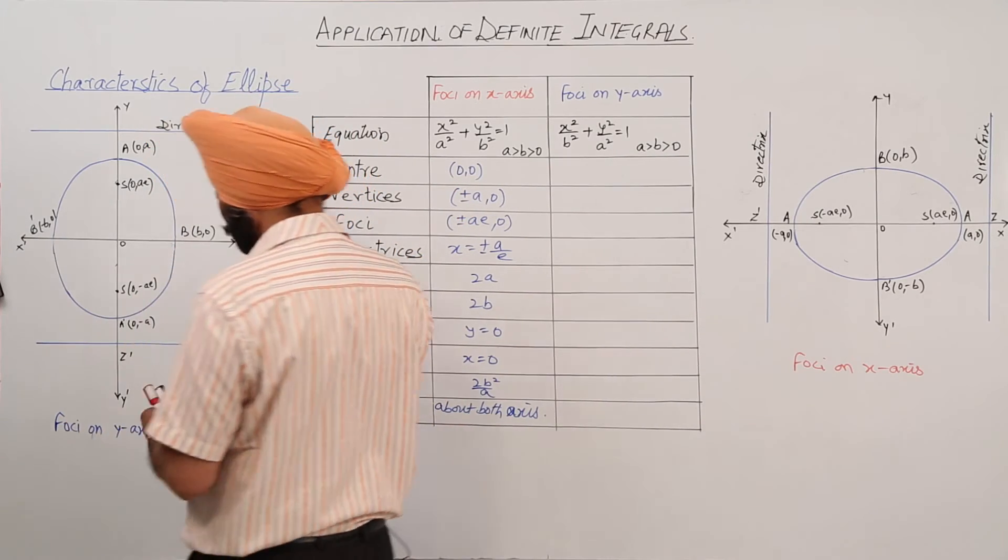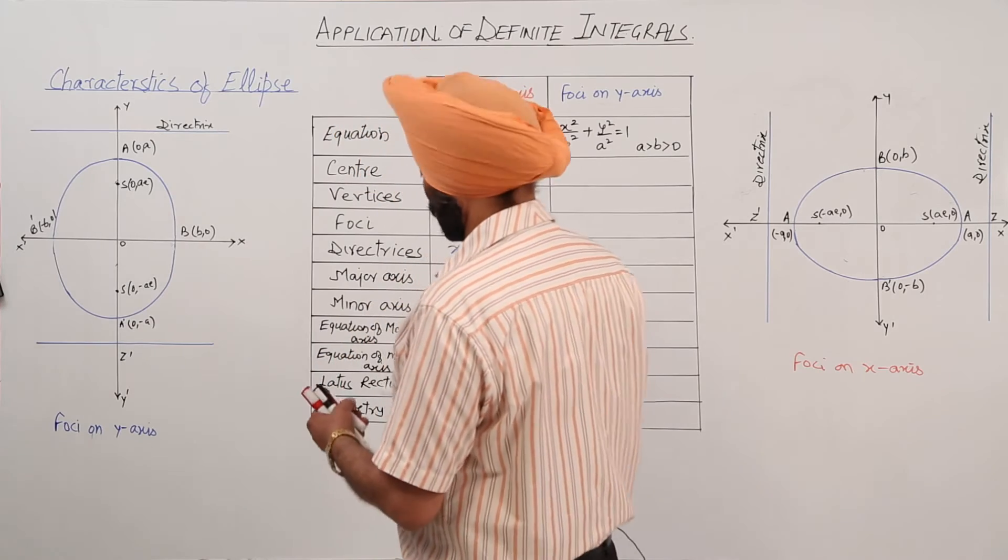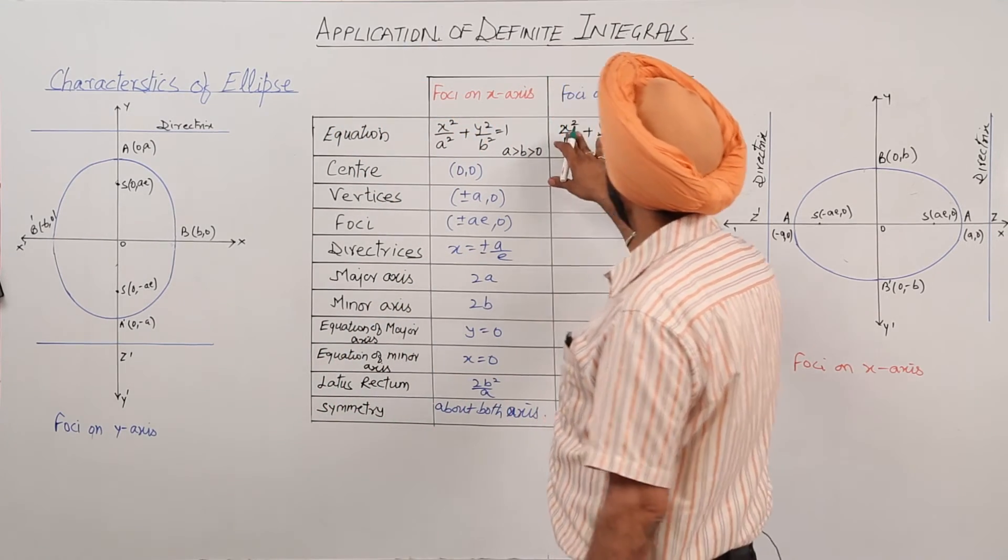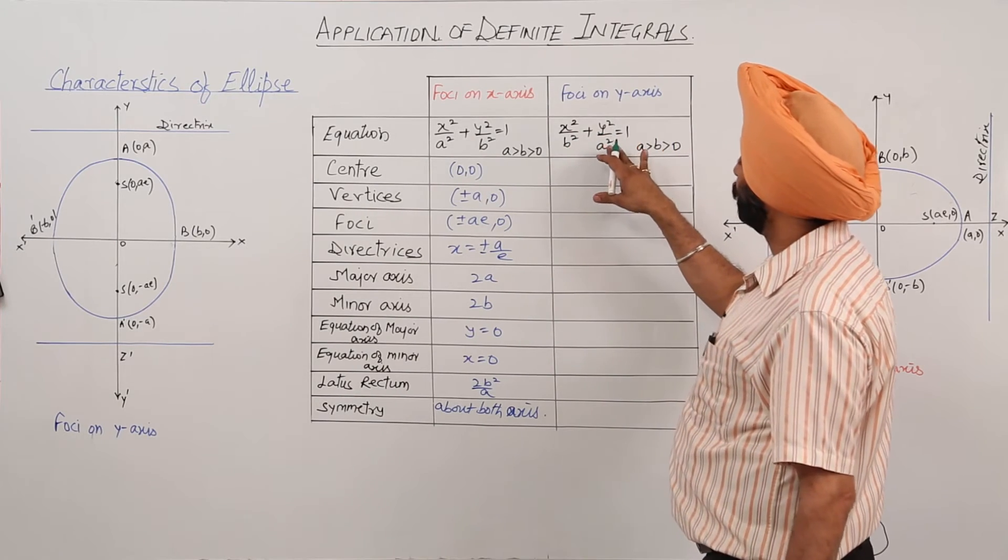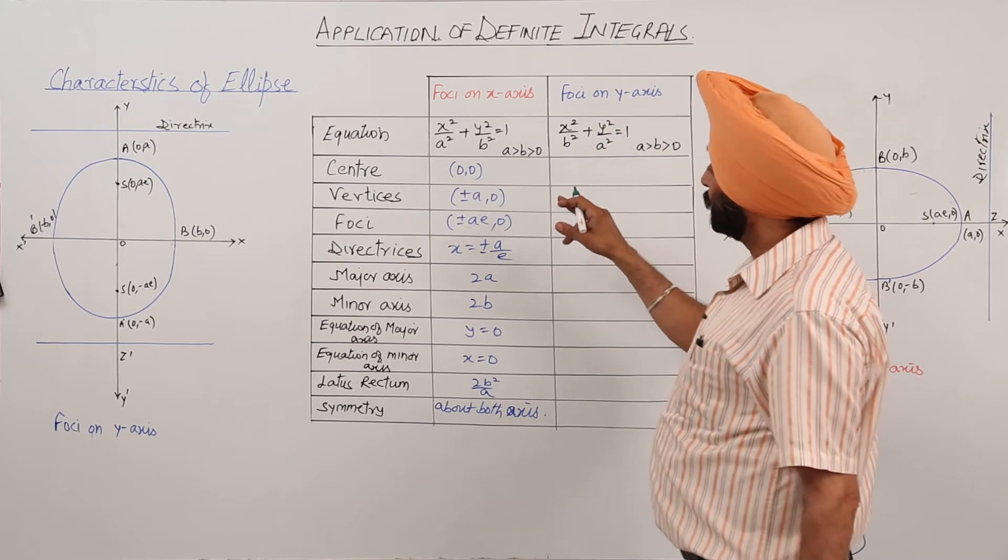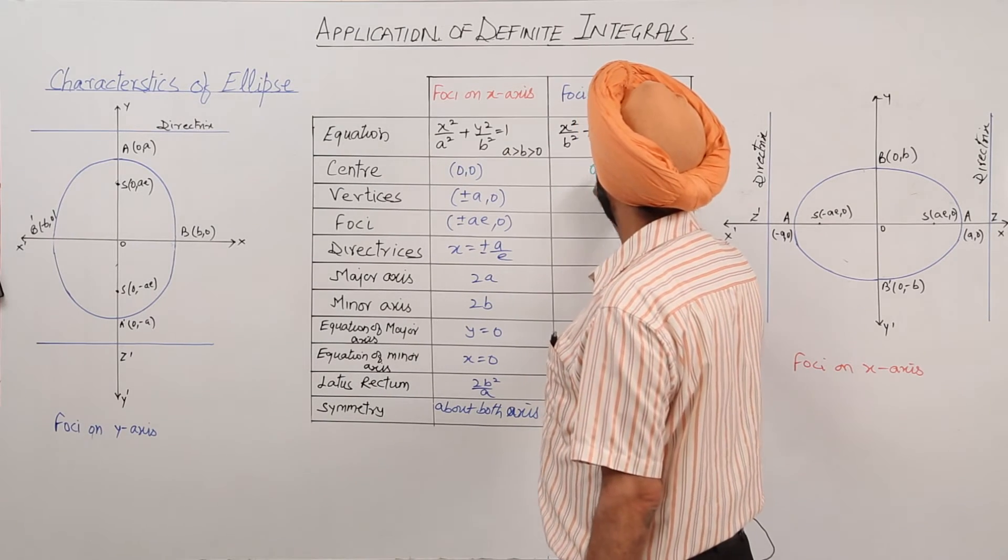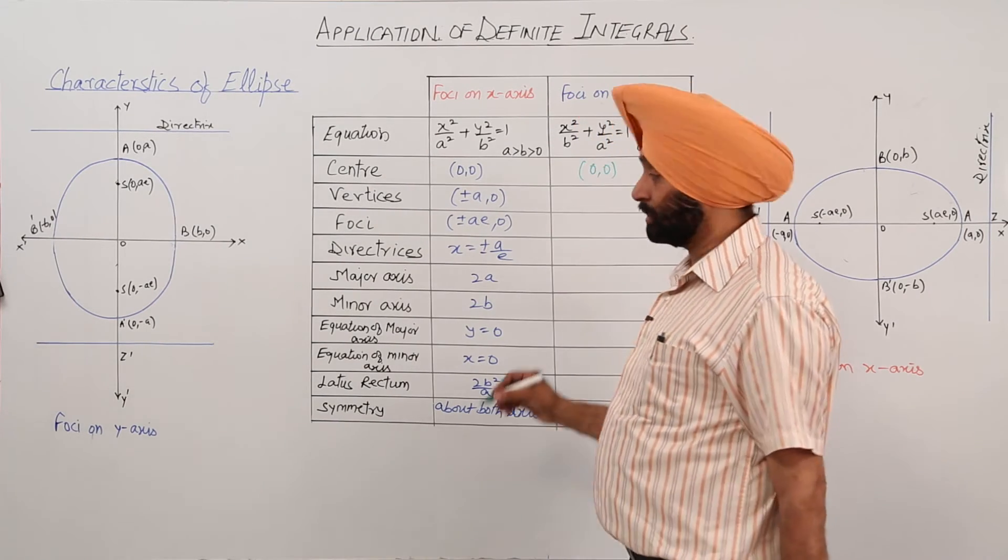Now, we are having foci on the y-axis: x square upon b square plus y square upon a square is equal to 1. Now, center: again coordinates, origin.